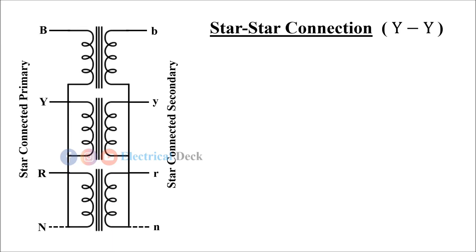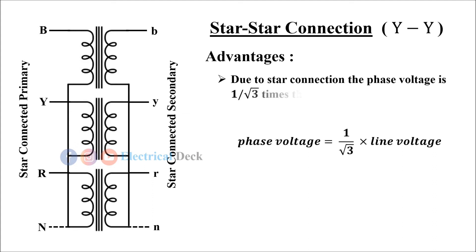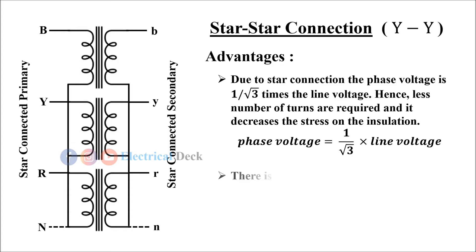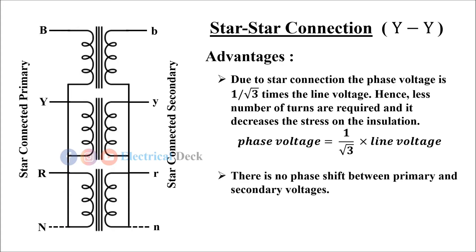The advantages of using star-to-star connection are: due to star connection, the phase voltage is one by root three times the line voltage, hence less number of turns are required and it decreases the stress on the insulation. There is no phase shift between primary and secondary voltages. As neutral is available, it is well suited for a three-phase four-wire system.